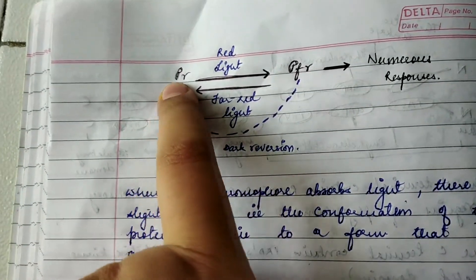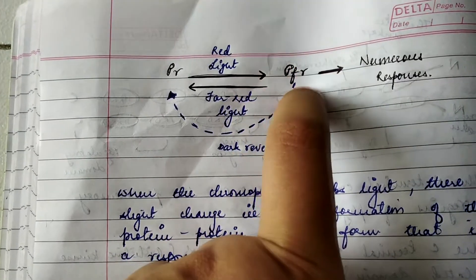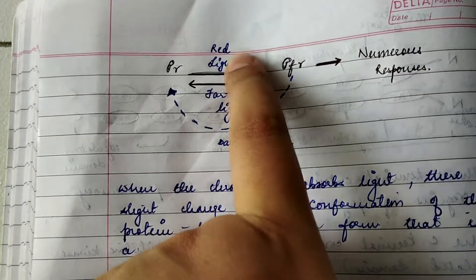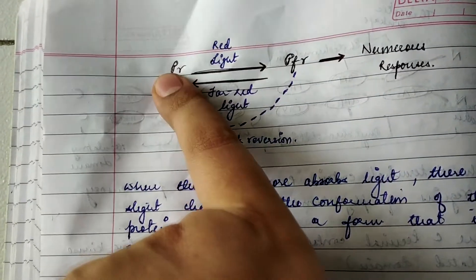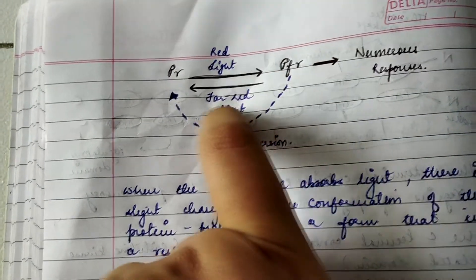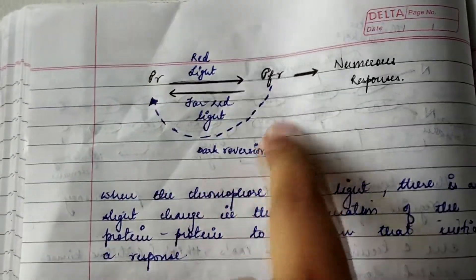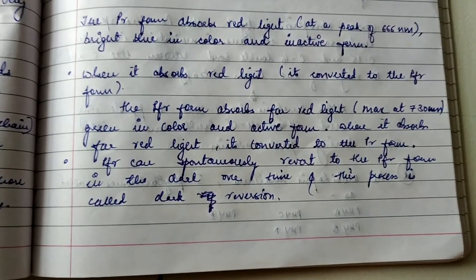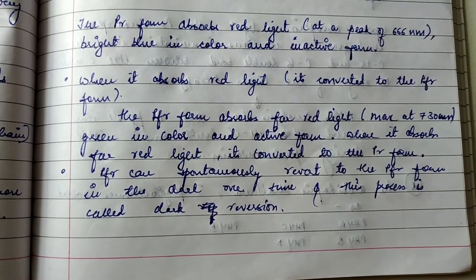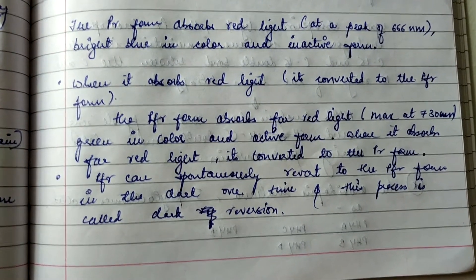The Pr form is the inactive form. When it absorbs red light it converts to the Pfr active form. When Pfr absorbs far-red light, or in the presence of darkness, it converts back to Pr. This process of conversion in the dark over time is called dark reversion.